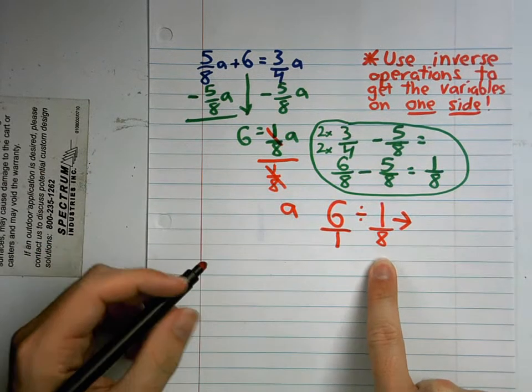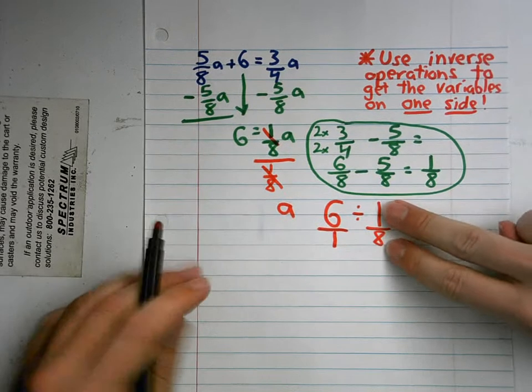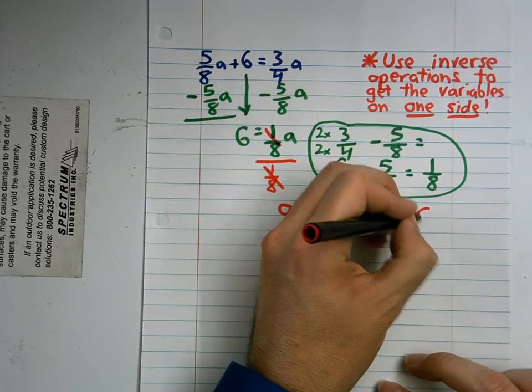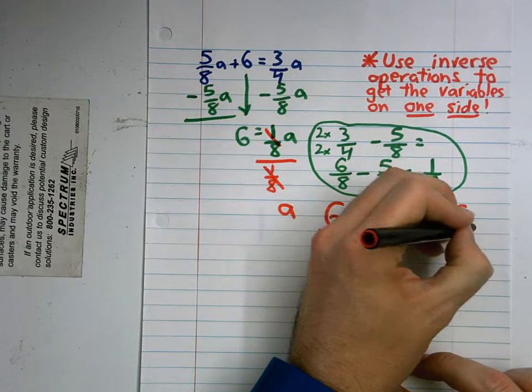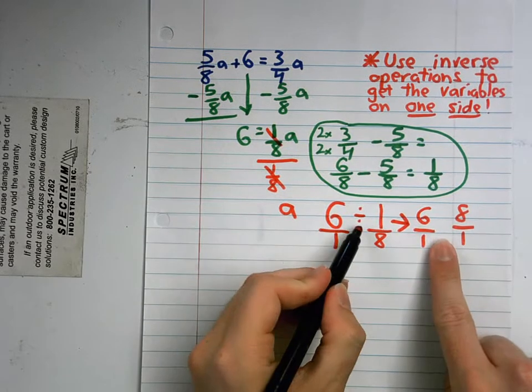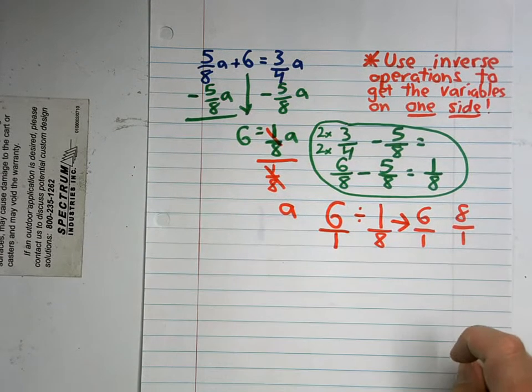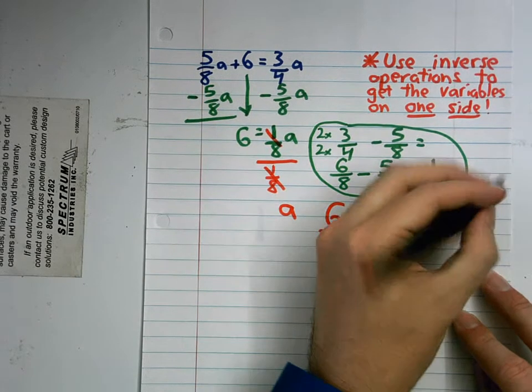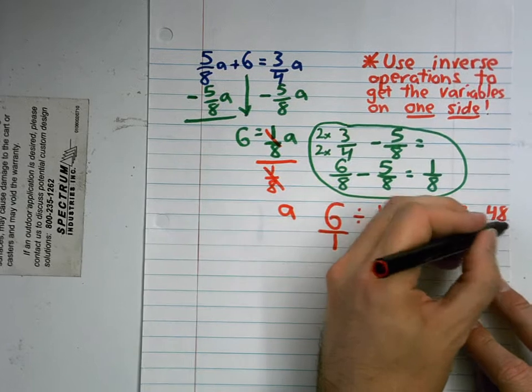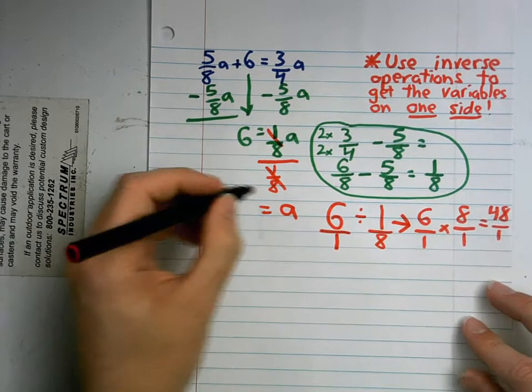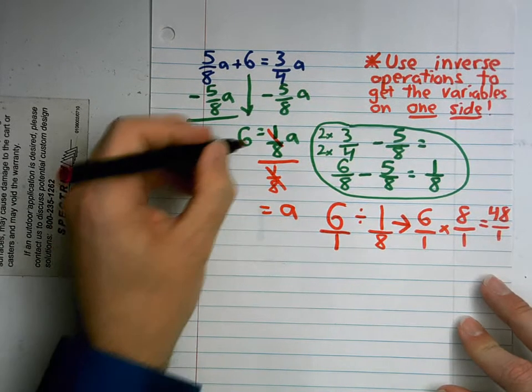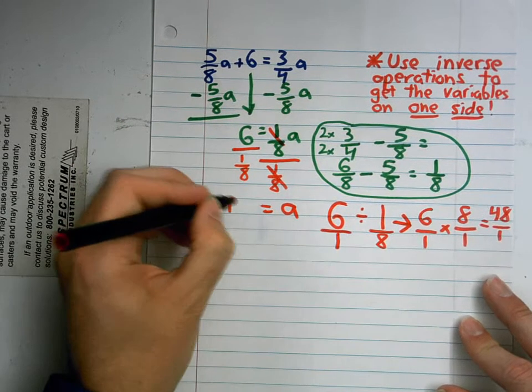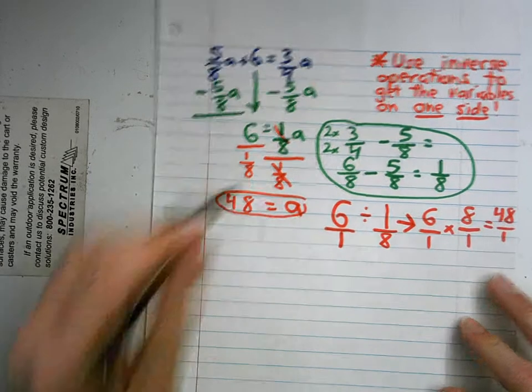I like to use that word reciprocal. Good job. And when we take the reciprocal, we basically flip the numerator and the denominator. So it's 6 over 1 and 8 over 1. What happens to this division sign when I come over here? It becomes a multiplication sign. 6 times 8 is 48. 1 times 1 is just 1. 48 over 1 is just 48. So when I divide 6 divided by 1/8th, it equals 48. So A equals 48.